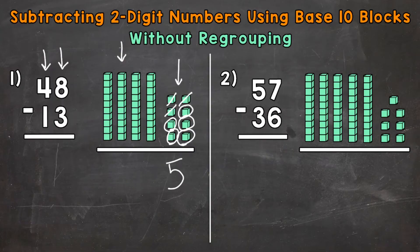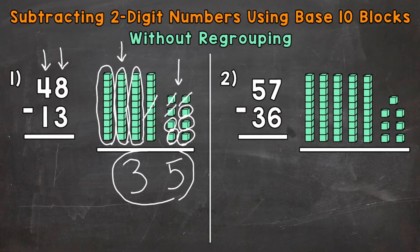Once we have the ones done we move to the tens. So we have 4 tens minus 1 ten. We need to subtract or take away 1 ten. Now we need to see how many tens we have left: 1, 2, and 3. So we put a 3 in the tens place in our answer. Our answer is 35.